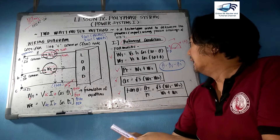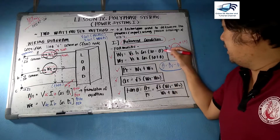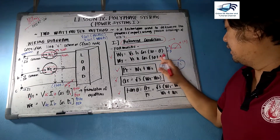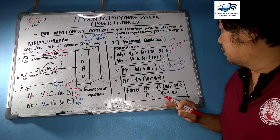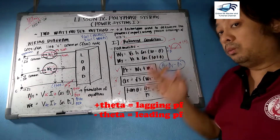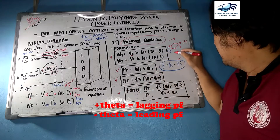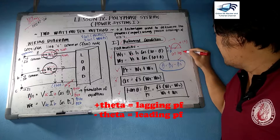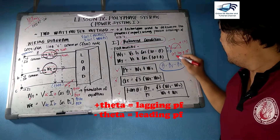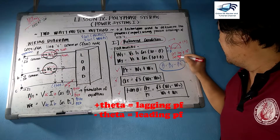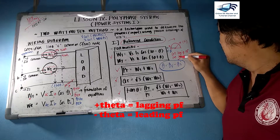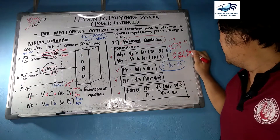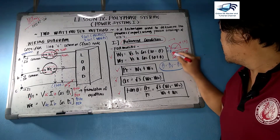The W1 and W2 formulas may be interchanged depending on connection. An important convention: a positive angle theta means a lagging power factor condition, while a negative angle theta means a leading power factor condition. Please take note of this.